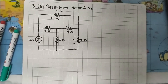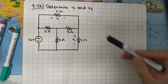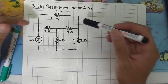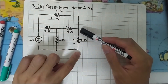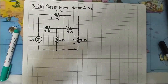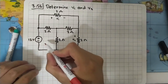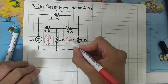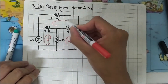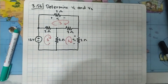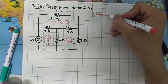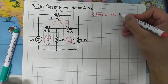We are going to solve problem 3.56 from Sadiku/Kubok. The question is to determine V1 and V2, where V1 is the voltage across one resistor and V2 is across another. We are going to use mesh analysis, so let's start by drawing the loops: here is loop 1, here is loop 2, and here is loop 3.